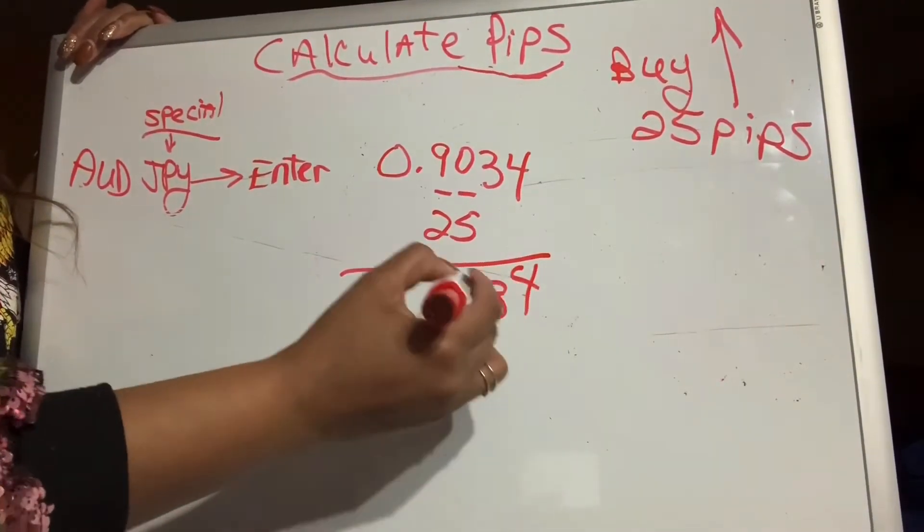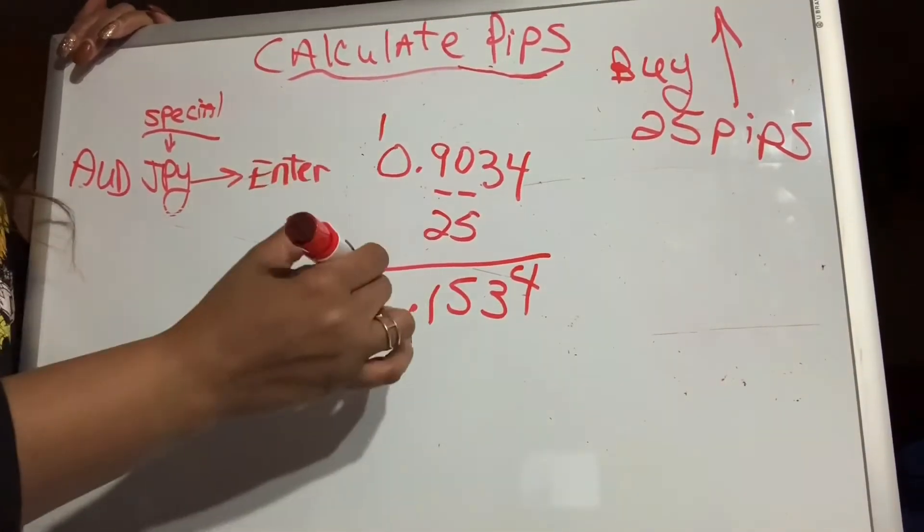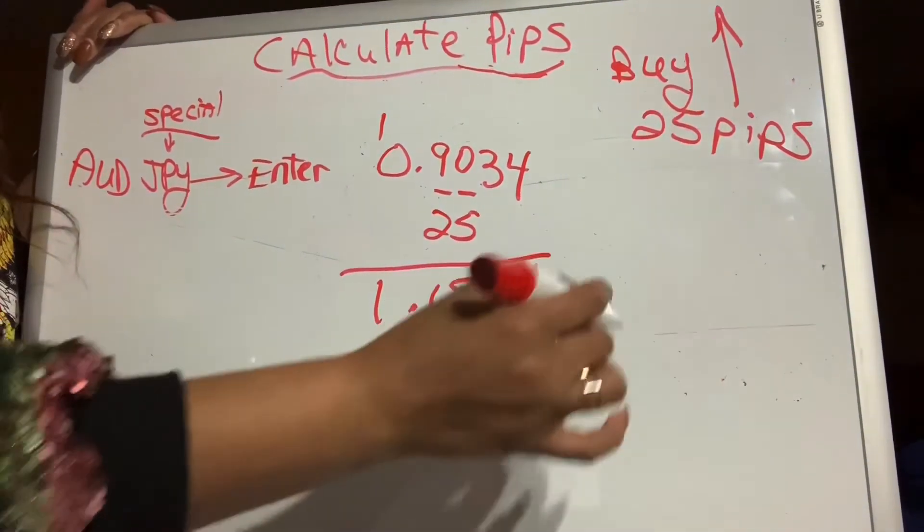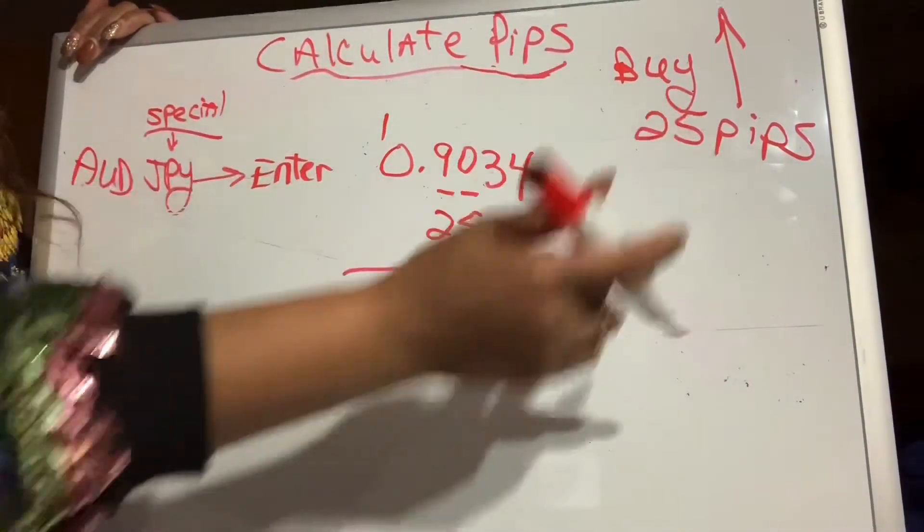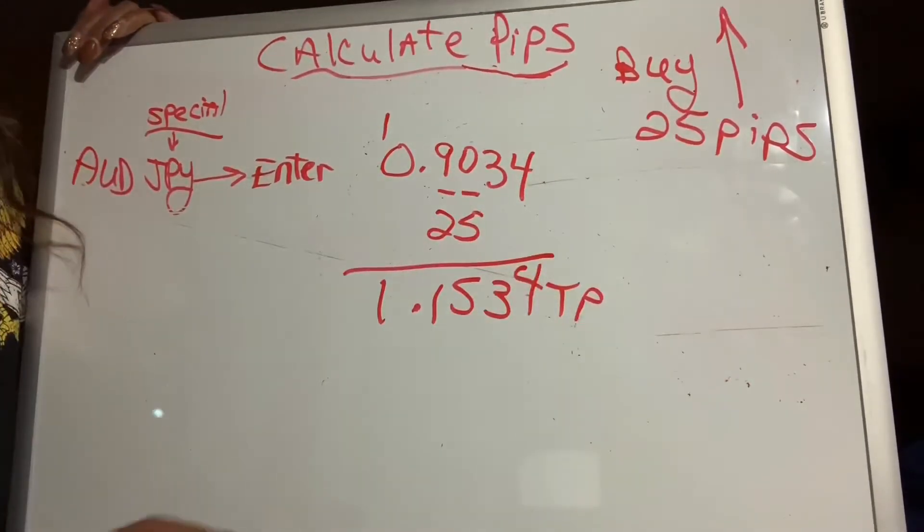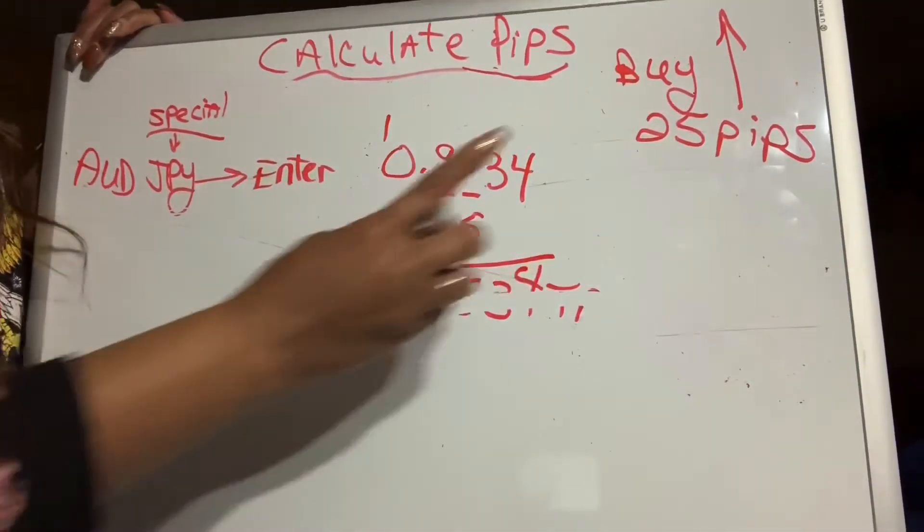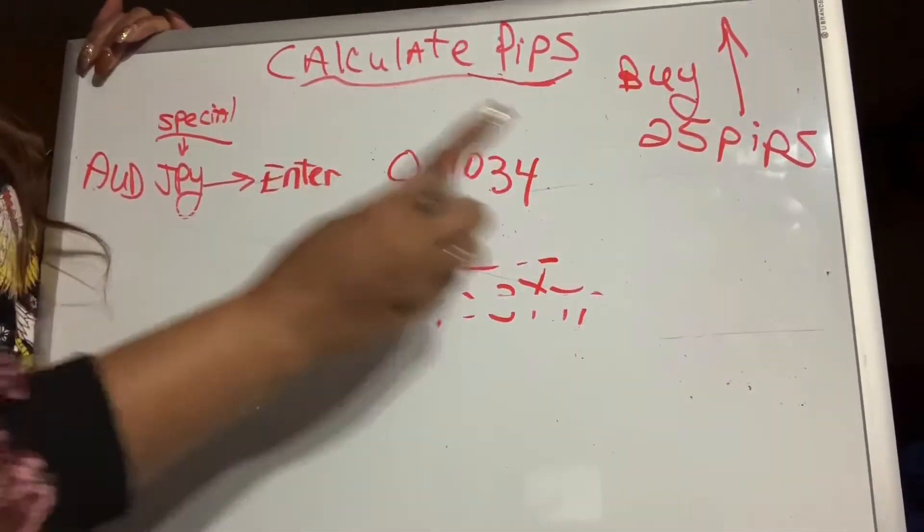Bring down my 4, 3, 5, 11. So our take profit is 1.1534. If we're catching 25 PIPs, bam, that's money. PIPs equal money. So let's do another one to make sure y'all got it.